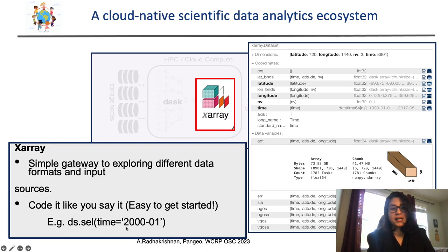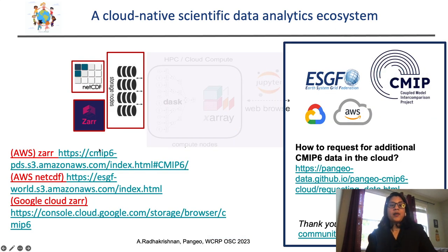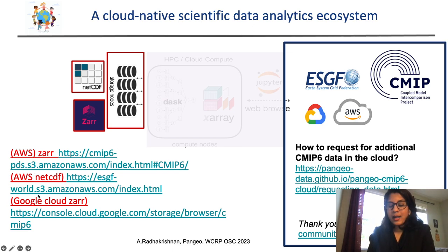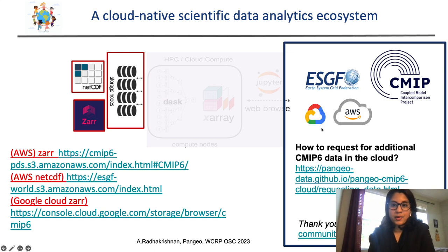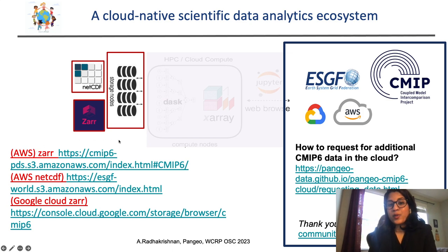Here's an example of selecting time. I want to highlight that we have cloud-hosted CMIP6 datasets, both in Amazon and in Google. Here are the links to these cloud holdings. Also, a big shout out to every organization listed here, especially the Earth System Grid Federation and the modeling centers that produce the original CMIP data, without which these analysis-ready and cloud-optimized datasets are not possible.